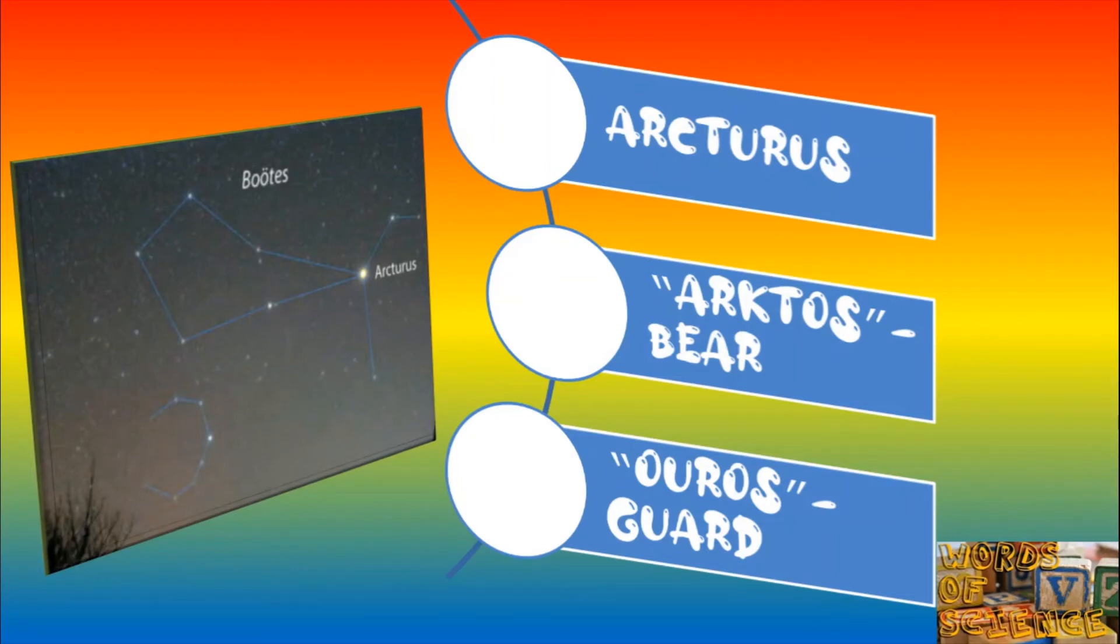It is named Arcturus, from the Greek Arctos, again meaning bear, and Ouros meaning guard.